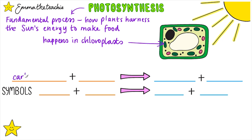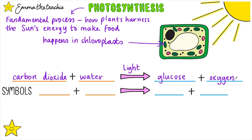This is the word equation: carbon dioxide plus water, arrow, with light along the arrow, gives glucose plus oxygen. We put light along the arrow because it's not a chemical, but it is a condition needed for photosynthesis to happen. If you're given a word fill with just two spaces, make sure you put in the chemicals and not light.